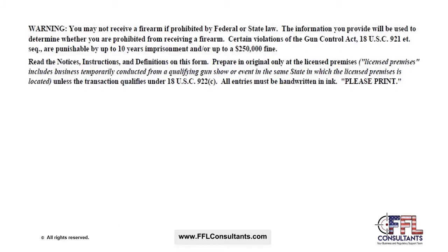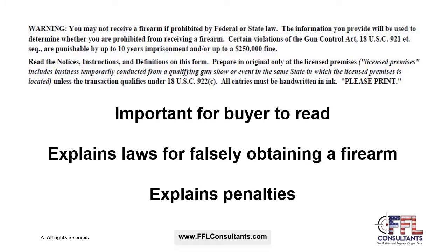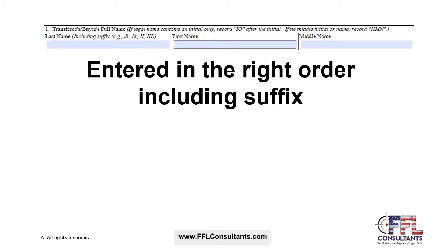The first thing we'll discuss is the warning printed on Form 4473 at the top of page one. This is probably one of the most important parts of the form for both you and the buyer to understand. We highly recommend you read this form — especially this warning in its entirety with the instructions — so you clearly understand the laws and the penalties. It explains the laws for falsely obtaining a firearm and also explains the penalties.